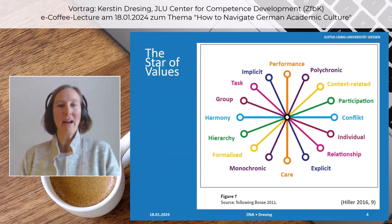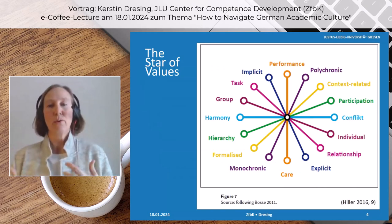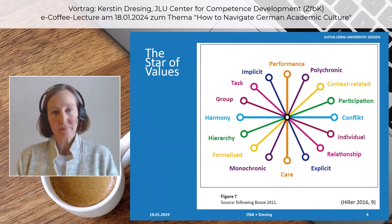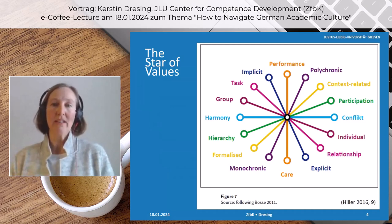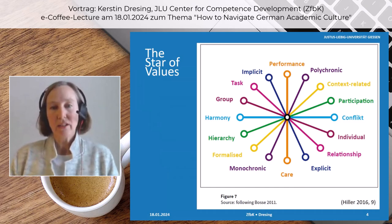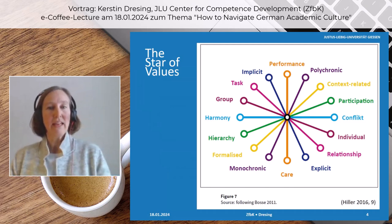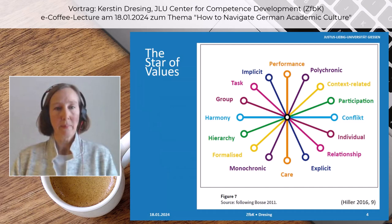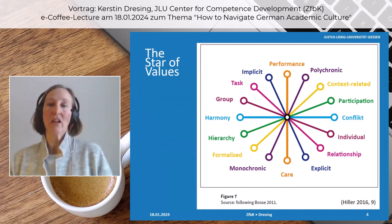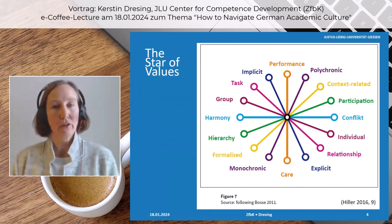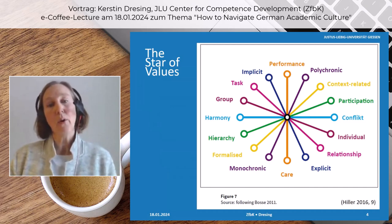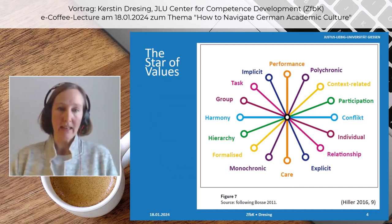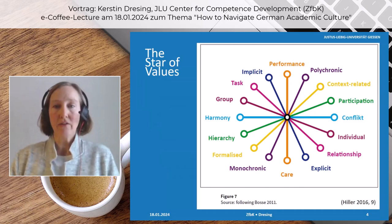It is well known among interculturalists that diverse cultural imprints rooted in our values often lead to misunderstandings. Interculturalists focus on guiding individuals to construct bridges between varied value orientations. I would like to introduce you to the Star of Values, a model that illuminates differences in cultural values. Many other models aim to compare different cultural settings along specific behavioral dimensions and describe a cultural setting as rather homogeneous, whereas the Star of Values is designed to be more open and flexible to differences within cultural settings — a unique advantage of this model.